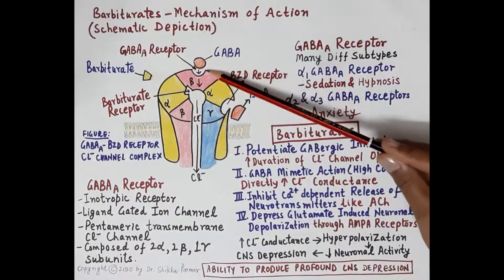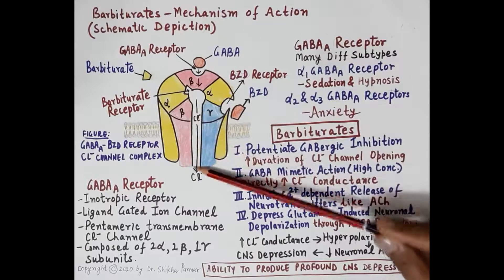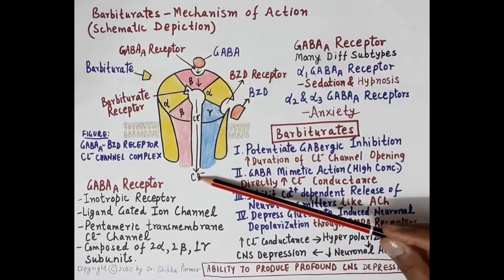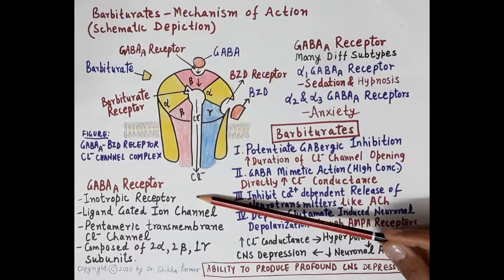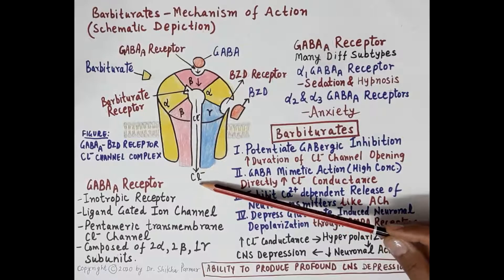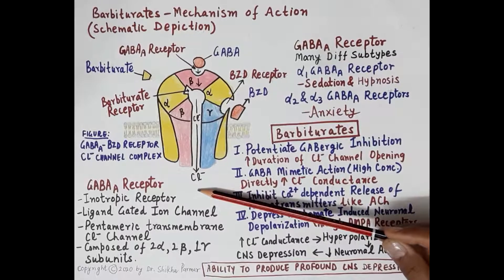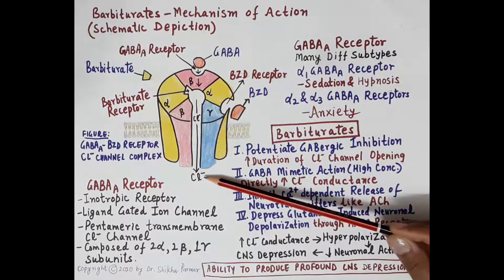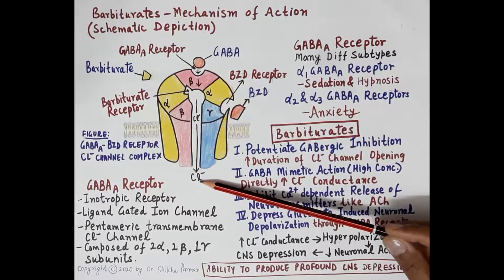The influx of chloride ions inside the neuron induces a negative potential within the nerve cell. Because of this negative potential, there is generation of hyperpolarization and inhibitory post-synaptic potential within the neuron. This hyperpolarization inhibits depolarization and action potential in the nerve cell, resulting in a fall in neuronal activity and CNS depression.